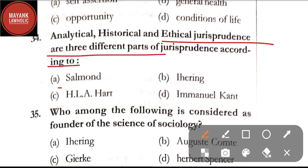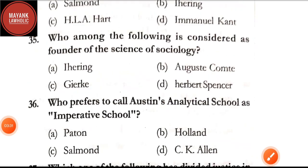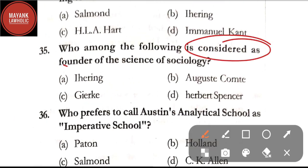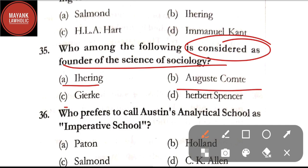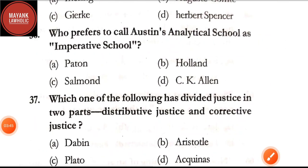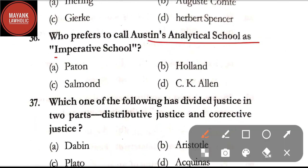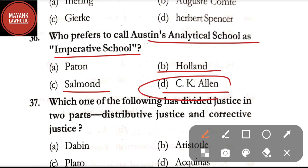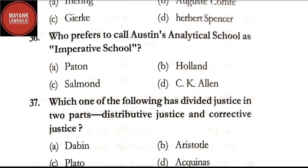Question number 34: analytical, historical, and ethical jurisprudence are three different parts of jurisprudence according to — option A: Salmond; option B: Ihering; option C: HLA Hart; option D: Emmanuel Kant. The correct answer is option A, Salmond. Question number 35: who among the following is considered as the founder of the science of sociology — option A: Ihering; option B: Auguste Comte; option C: Herbert Spencer. The correct answer is option B, Auguste Comte. Question number 36: who prefers to call Austin's analytical school as the imperative school — option A: Payton; option B: Holland; option C: Salmond; option D: CK Allen. The correct answer is option D, CK Allen.